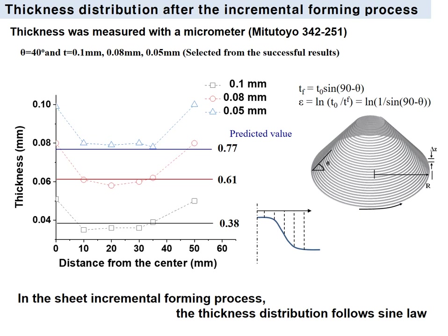We compared the thickness distribution with the predicted value and the experimental result. The predicted value was obtained from the sine law. For an angle of 40 degrees, the thicknesses of 0.1 mm, 0.08 mm, and 0.05 mm were compared — all three cases produced the conical shape successfully. Thickness was measured with a micrometer. The horizontal line in the figure shows the predicted value, and in the slope region, the predicted thickness shows a similar result. From this, it was found that in the sheet incremental forming process, the thickness distribution follows the sine law, and formability with different angles was achieved successfully.